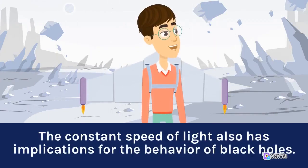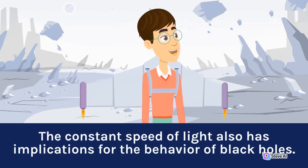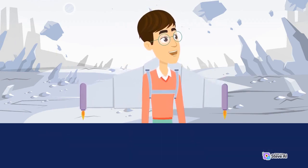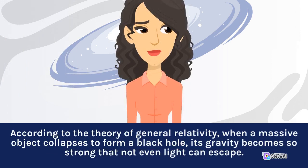The constant speed of light also has implications for the behavior of black holes. According to the theory of general relativity, when a massive object collapses to form a black hole, its gravity becomes so strong that not even light can escape.